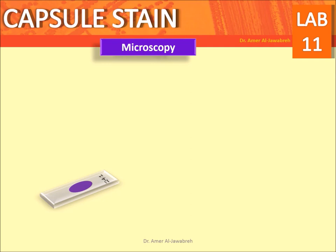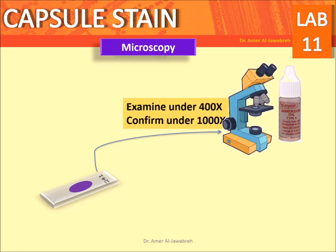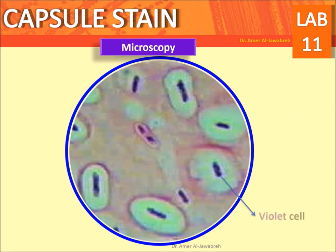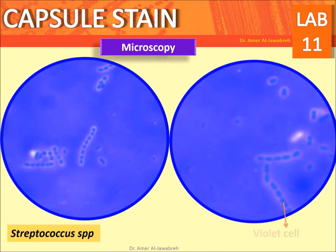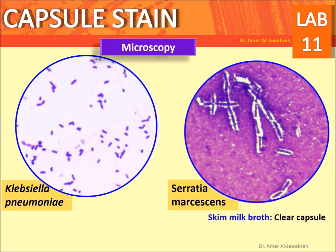Microscopy: examine under 400x, then confirm under 1000x. Lower the condenser to decrease the amount of light to clearly view the capsule. Expected appearance: violet cell with faint blue capsule against a violet background.